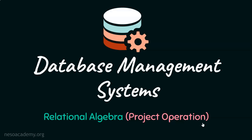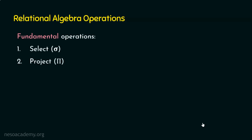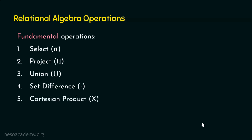There are six fundamental operations in relational algebra: number one, select; number two, project; three, union; four, set difference; five, cartesian product; and the sixth one is rename. We are now going to focus on the second relational algebra operation — the project.